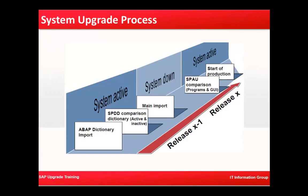Here you can see the system upgrade process. You have your ABAP dictionary import, SPDD comparison, and there are some active and inactive objects. There is also the main import taking place. All three of these activities happen during the active state of the system — that is, the system is up and running during this phase, right from dictionary import through SPDD comparison and main import. When the system is down you import, then you perform SPAU, and finally the start of production.